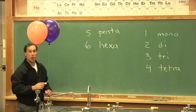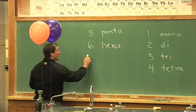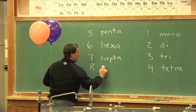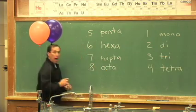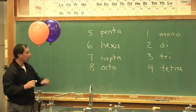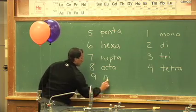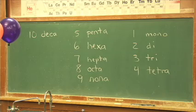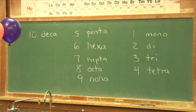If you're interested in knowing more, we'll have a look real quick. Seven happens to be called hepta. Eight, as in octane, gasoline, octa. Nine is nona. And ten is deca, like a decade.